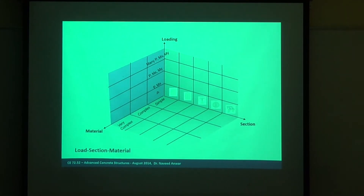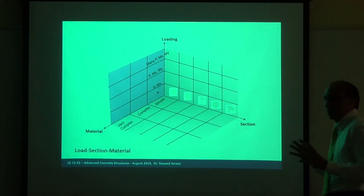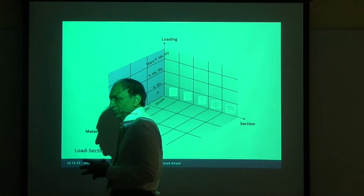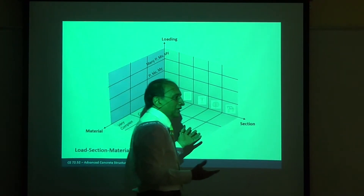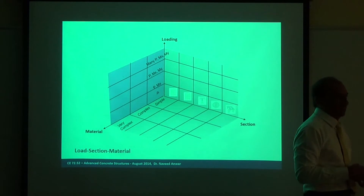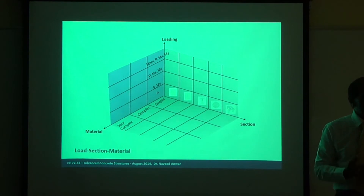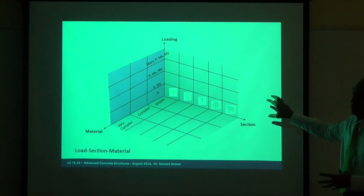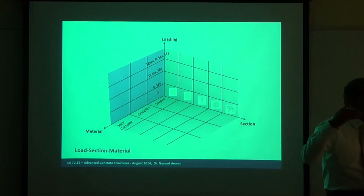The five factors that complicate the column design problem are: number one, section shape; number two, section material; number three, loading; number four, length; number five, framing or bracing. There are interactions between all of them that need to be considered before we can solve the column design. Many engineers may not realize that column design is actually highly complicated because of these five considerations.